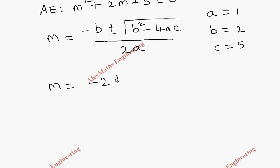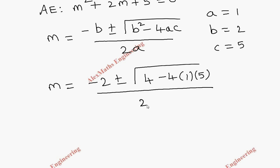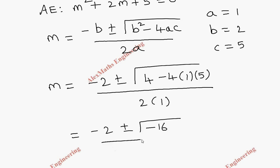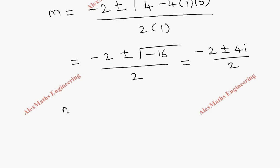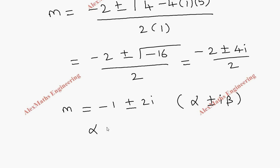Substituting, m = (−2 ± √(4 − 4×1×5)) / (2×1) = (−2 ± √(−16)) / 2 = (−2 ± 4i) / 2. Dividing individually, we get m = −1 ± 2i. This is of the form α ± iβ, so by comparison α = −1 and β = 2.